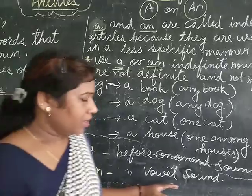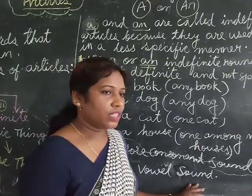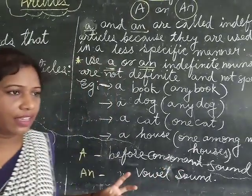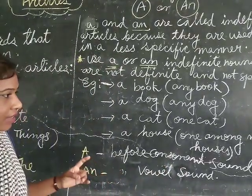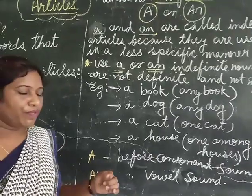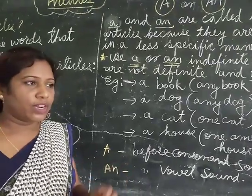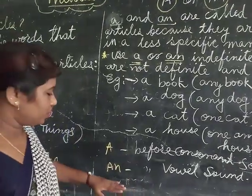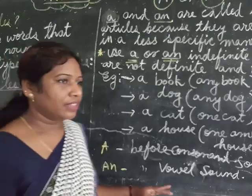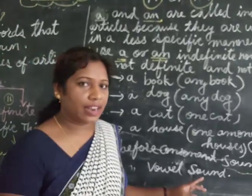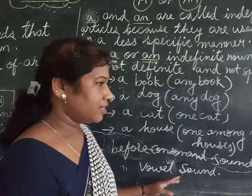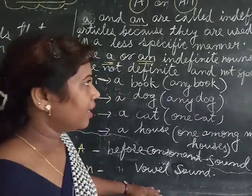I hope you know the vowels — that is a, e, i, o, u. Before all these vowel sounds we use 'an.' For example, 'this is an hour,' 'this is an end.'